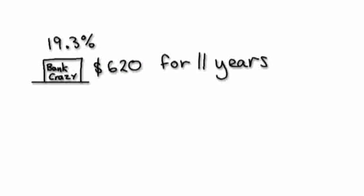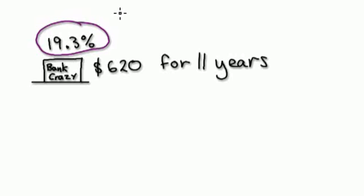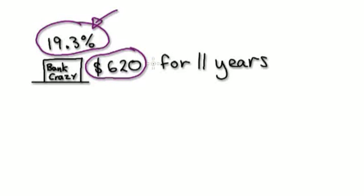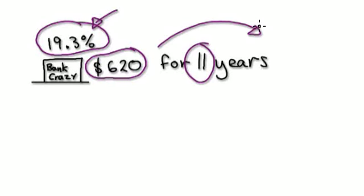Now it's your turn to have a go. Let's say Bank Crazy is giving you an interest rate of 19.3% per year. That's really high — 19.3%. You're going to put $620 into the account for 11 years. So how much will you have in total after the 11 years?